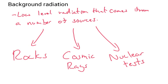Now all around us is something called background radiation. Background radiation is generally a low-level radiation that comes from a number of different sources. It could be coming from rocks, cosmic rays, and even the remnants of old nuclear tests. It's normally at a low level, and it's completely safe for human beings.